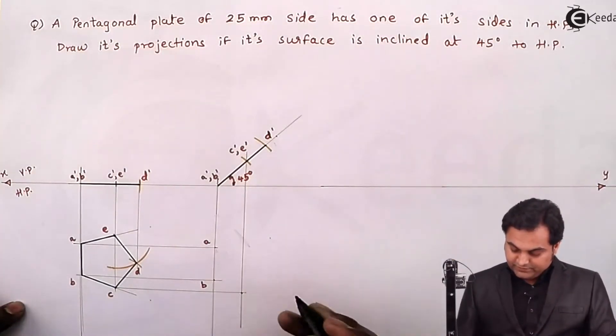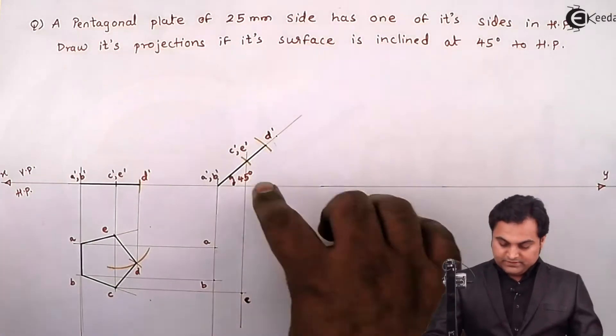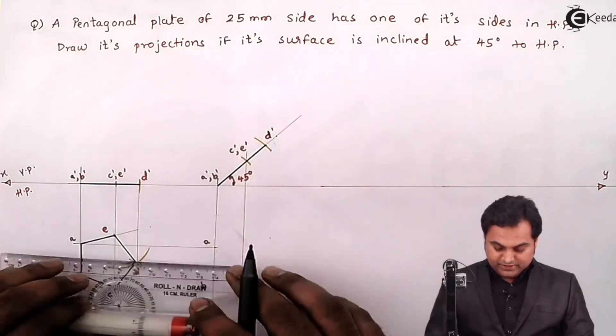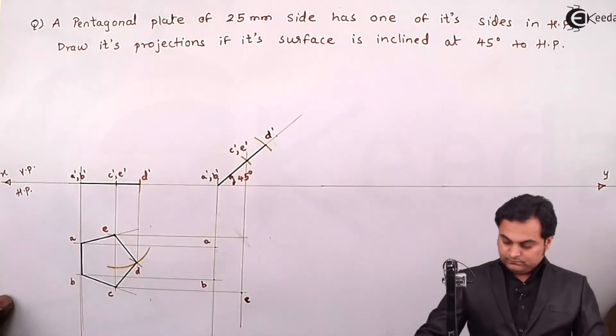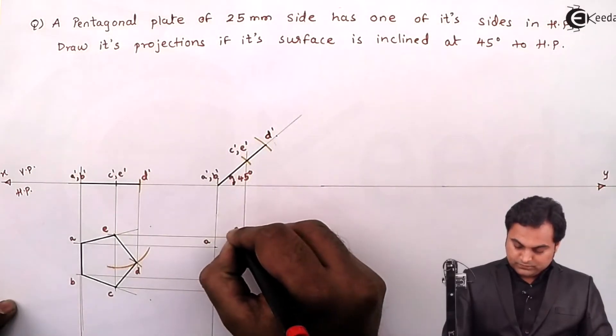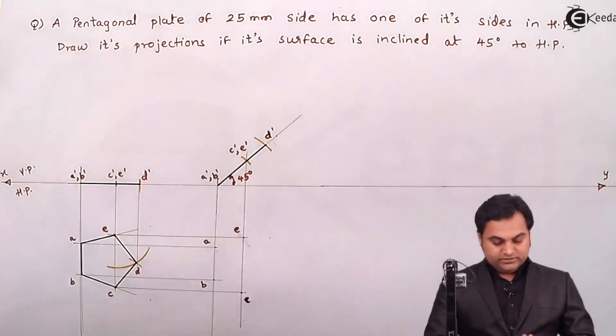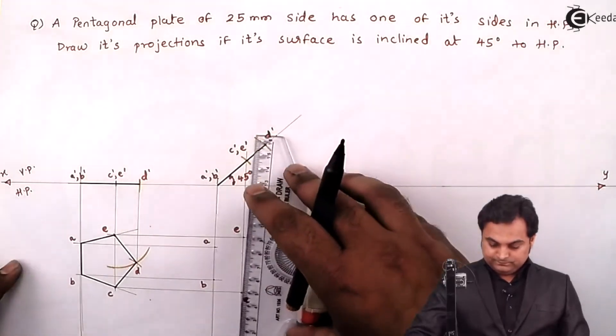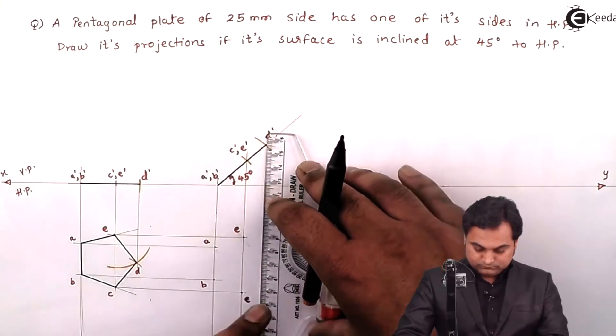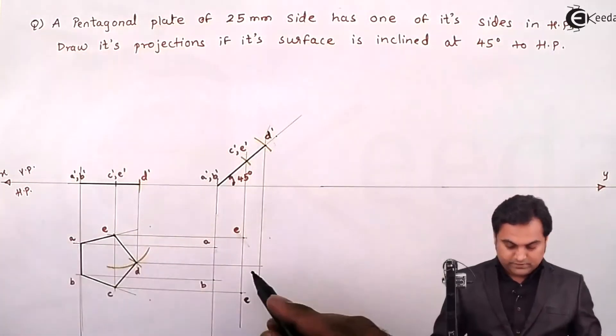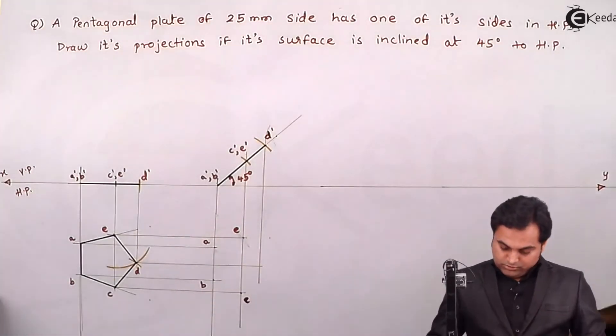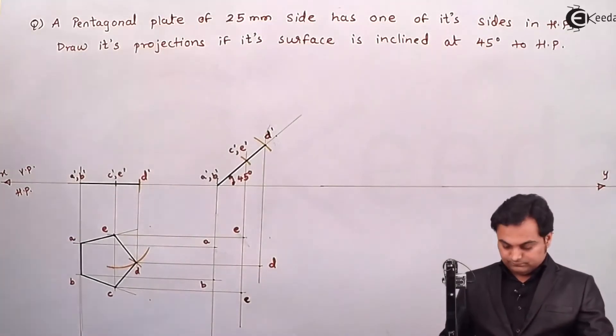This is point C where it intersects, that gives me point C new. Next for E, here there is E', so this is point E. Next for D', end point D here, for E this is point E.